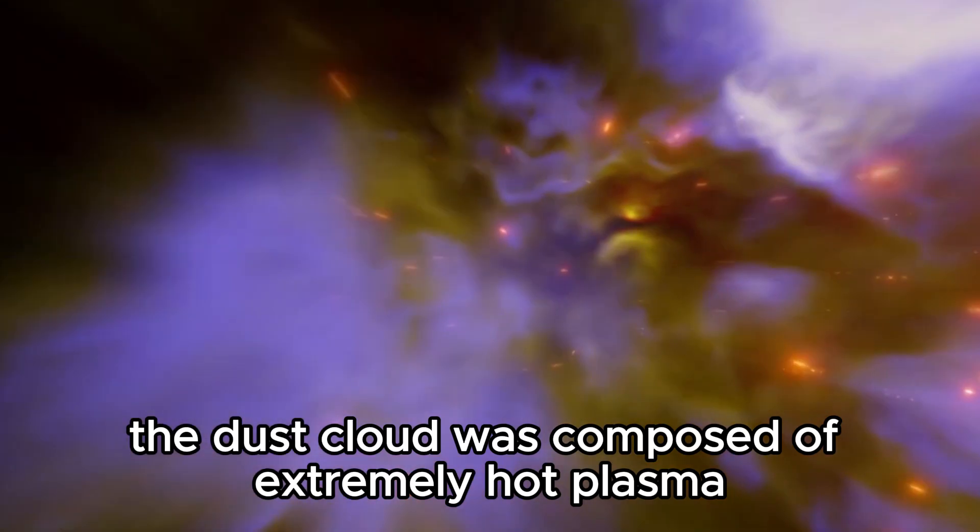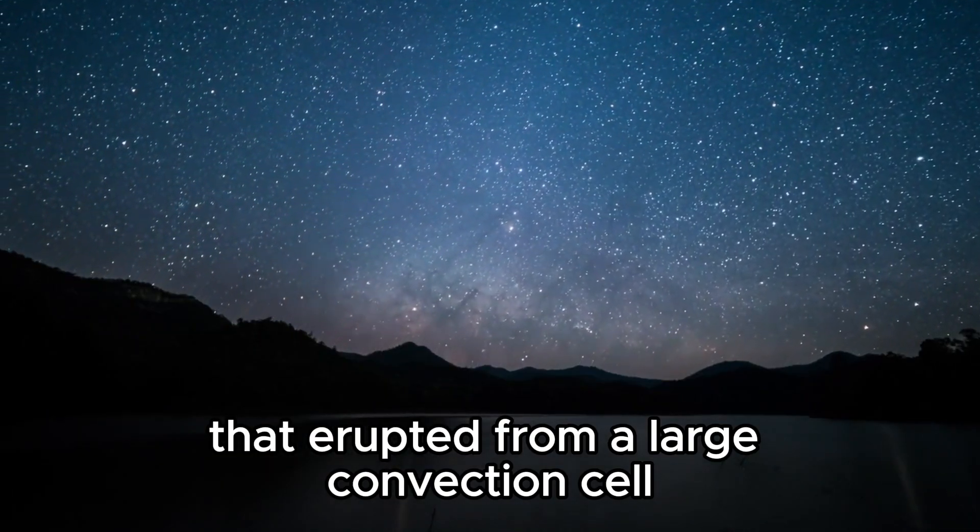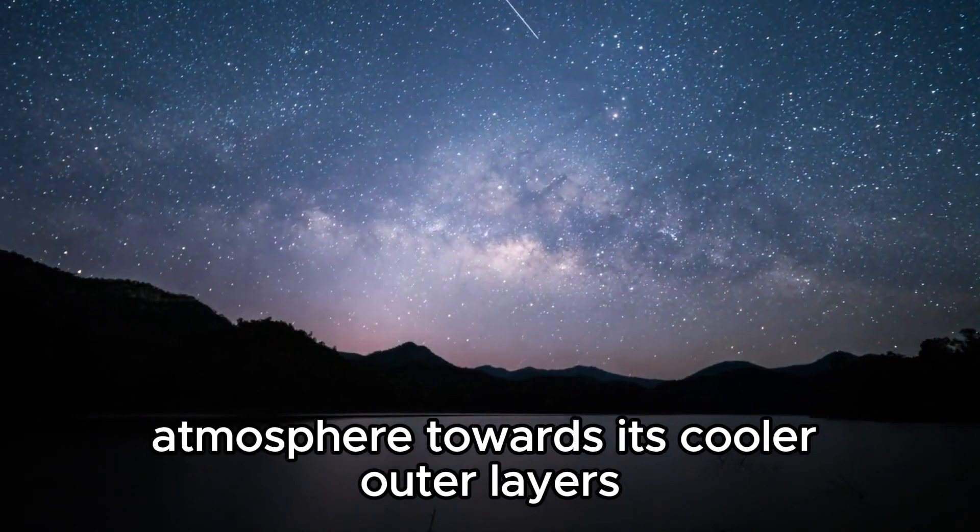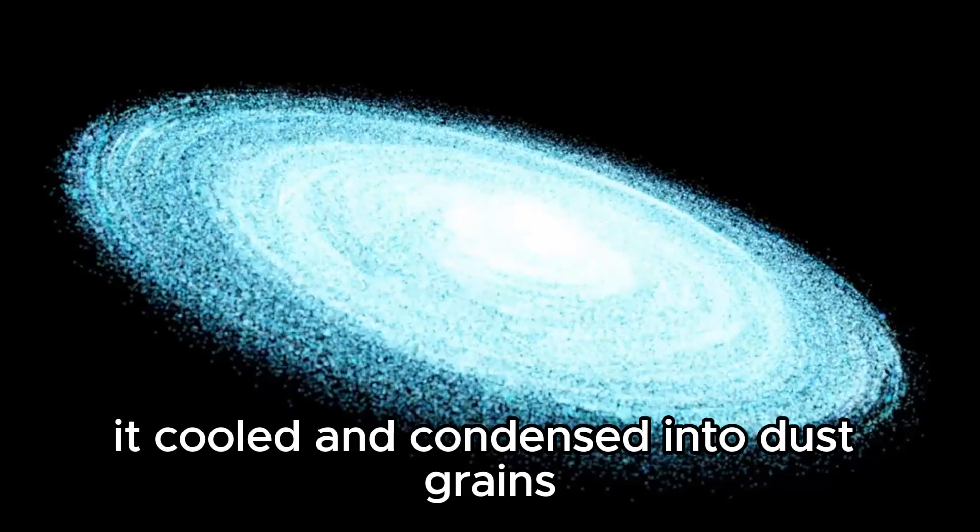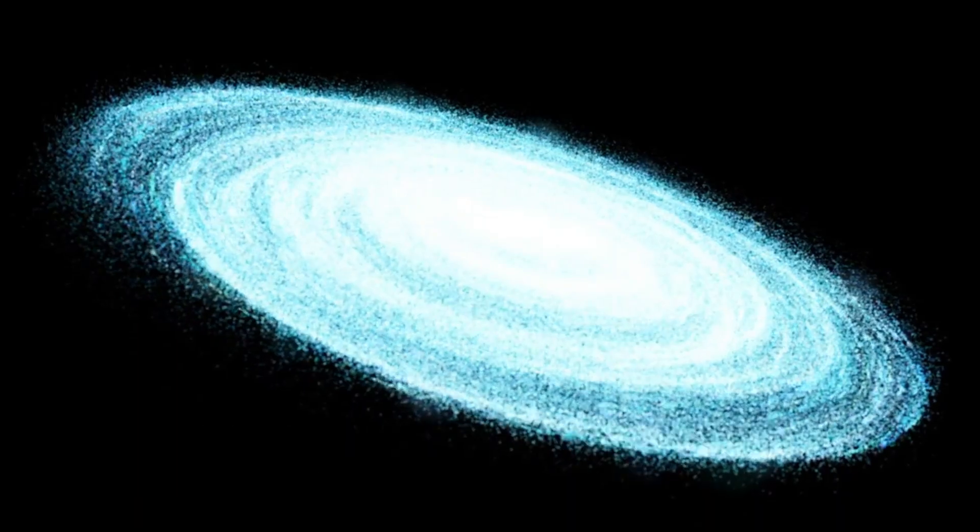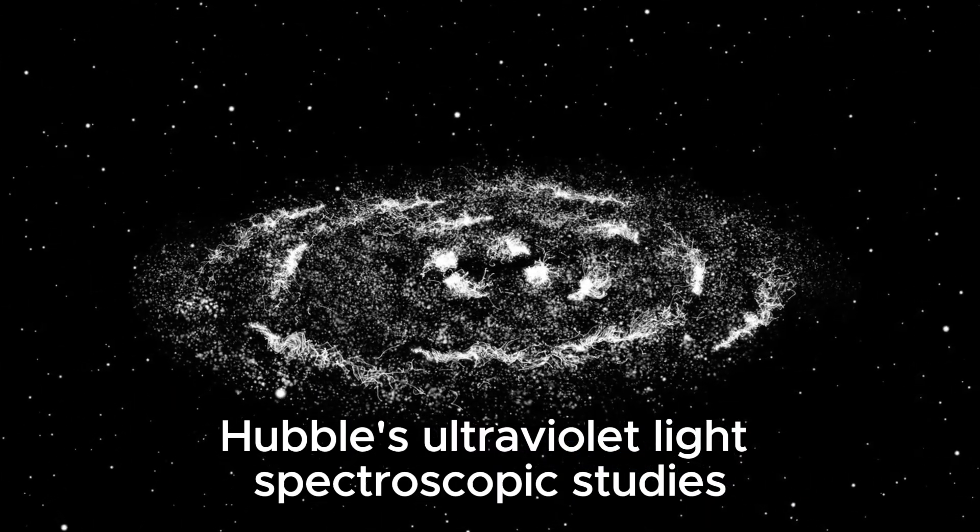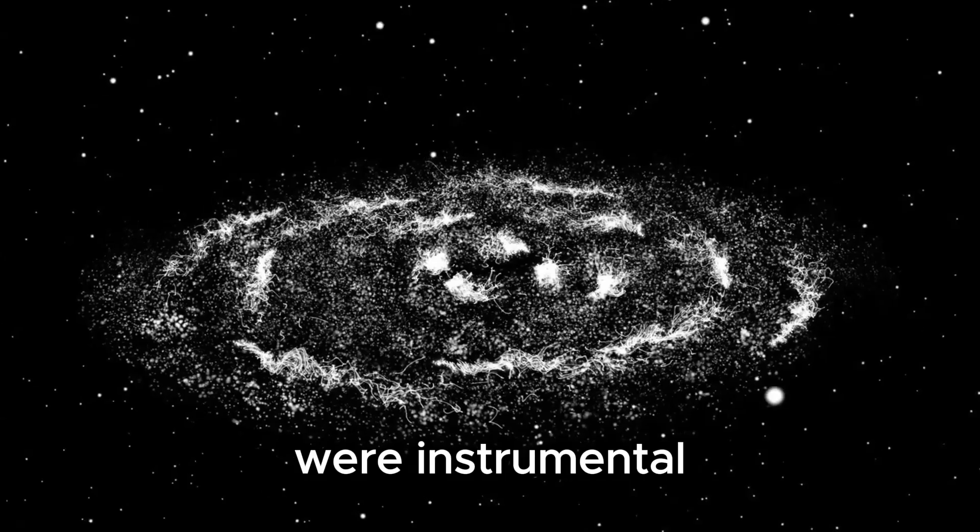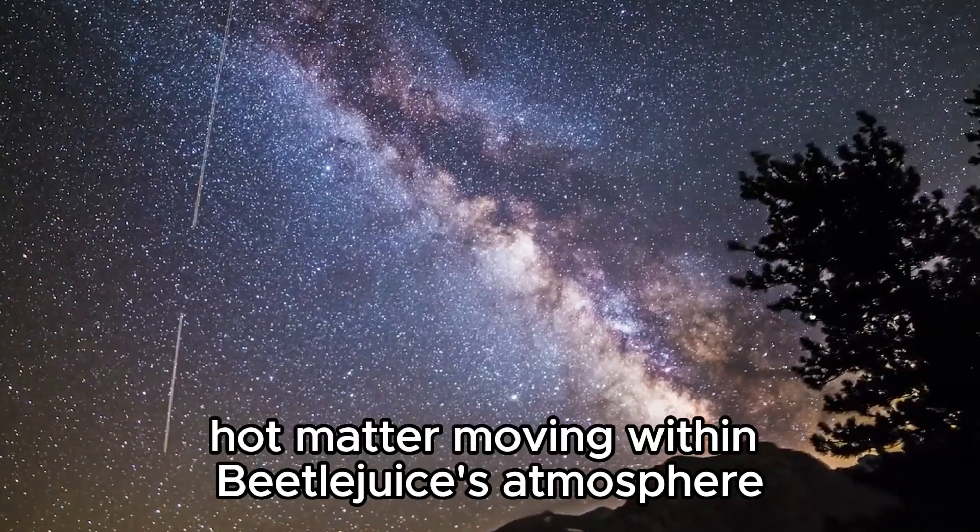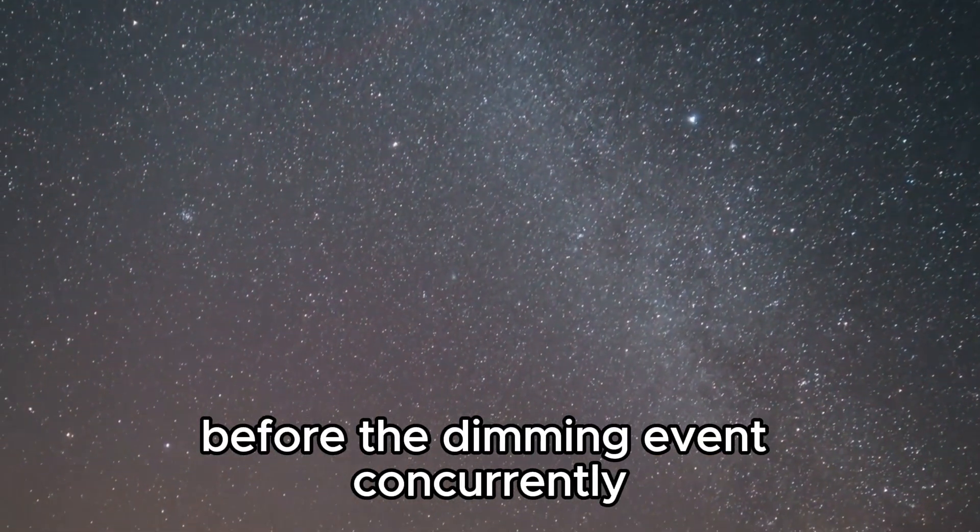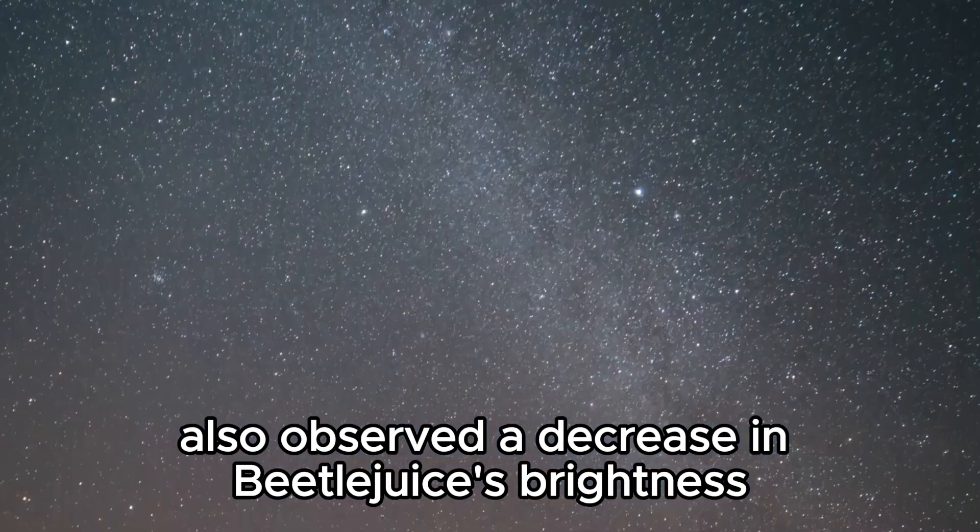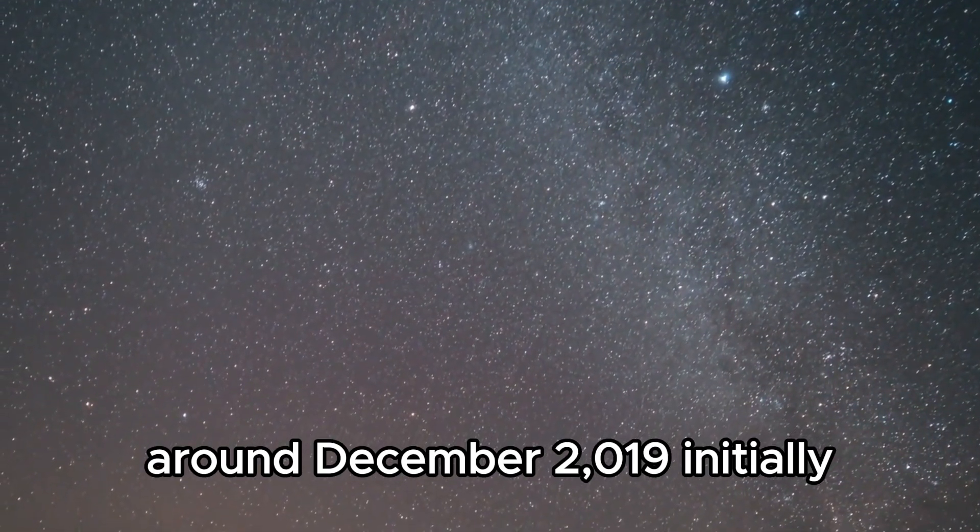The dust cloud was composed of extremely hot plasma that erupted from a large convection cell on Betelgeuse's surface. As this plasma traversed through the star's hot atmosphere towards its cooler outer layers, it cooled and condensed into dust grains, forming the light-blocking cloud that covered approximately a quarter of Betelgeuse's surface. Hubble's ultraviolet light spectroscopic studies initiated in January 2019 were instrumental in piecing together the sequence of events leading to Betelgeuse's dimming. These studies detected dense, hot matter moving within Betelgeuse's atmosphere before the dimming event.